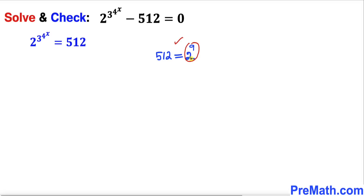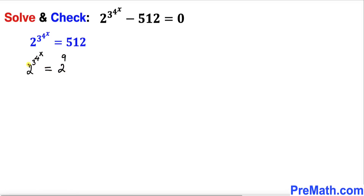That means if we multiply 2 nine times we are going to get 512. So therefore this equation can be written as 2 power 3 power 4 power x equals to 2 power 9. Now we can see that our bases on both sides are the same, so we can equate the exponents.